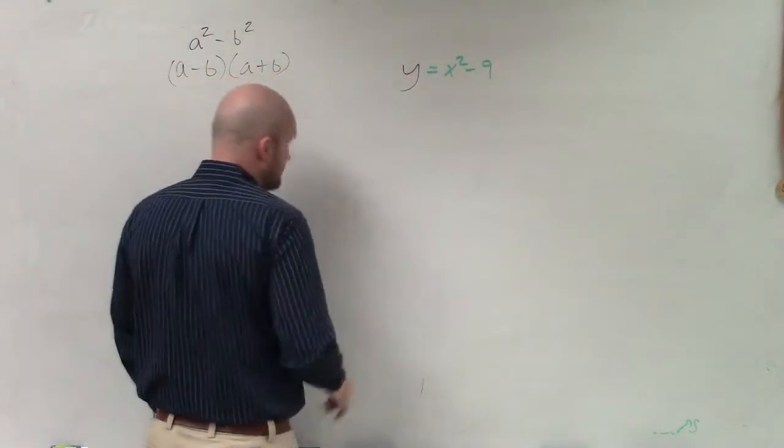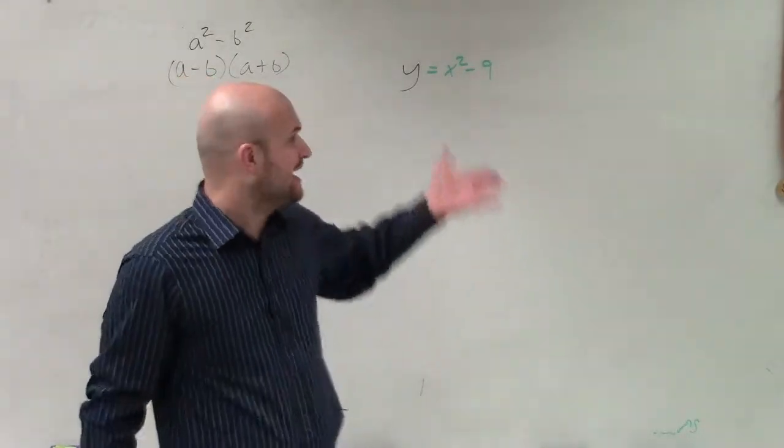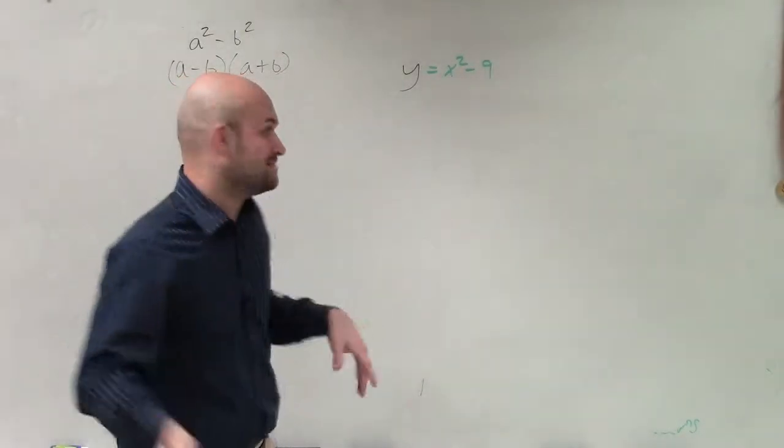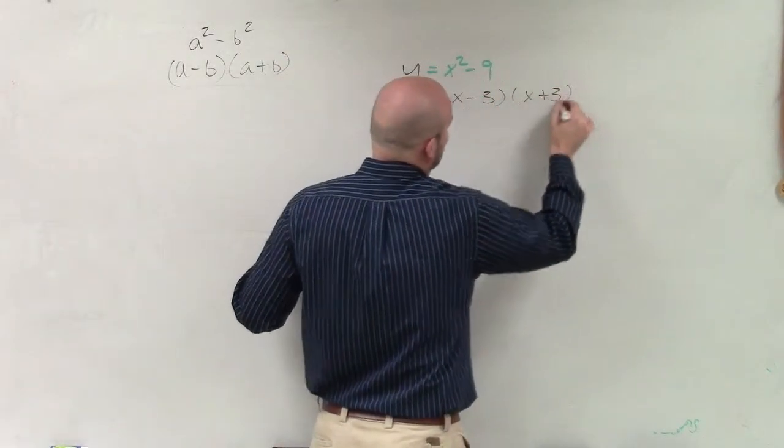Well, in this case, you can see that x² is the square term, x times x. And 9 is the square term, 3 times 3. So therefore, I can factor this into (x - 3) times (x + 3).